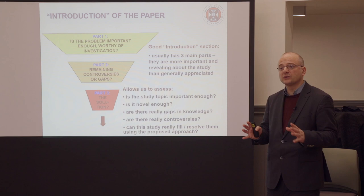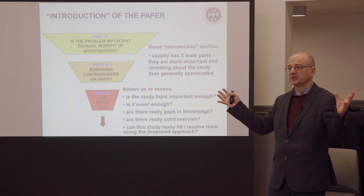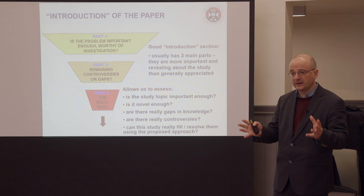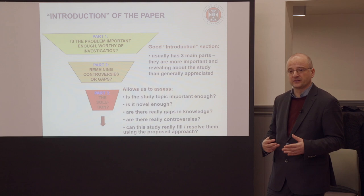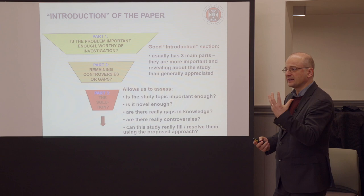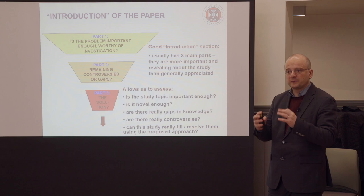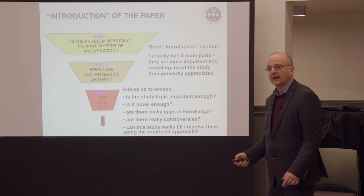In the first part you need to convince your reviewer that this is a big, important problem worthy of investigation. Start very broadly, putting things in context. On top of that you need to convince me that there are remaining controversies or gaps in knowledge — maybe ten studies say this and seven say that, or there's one key gap we don't know. Then in the third part, explain in a few sentences how your study is going to resolve this controversy or fill this gap.